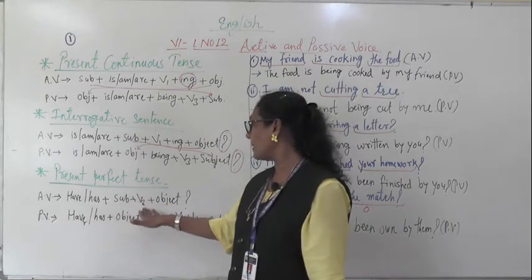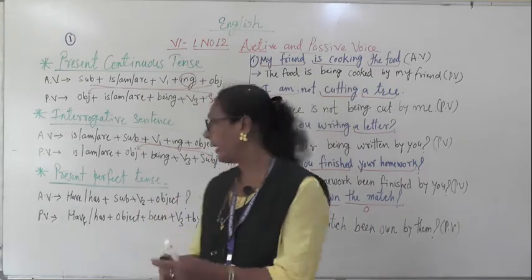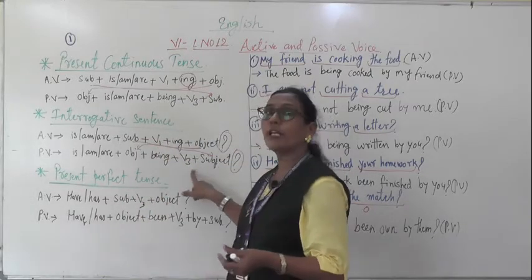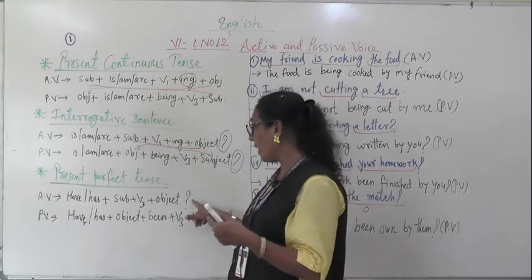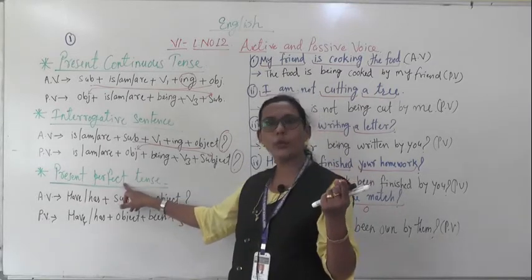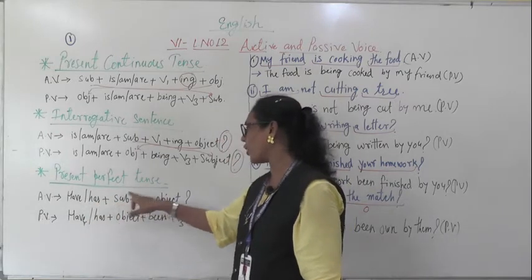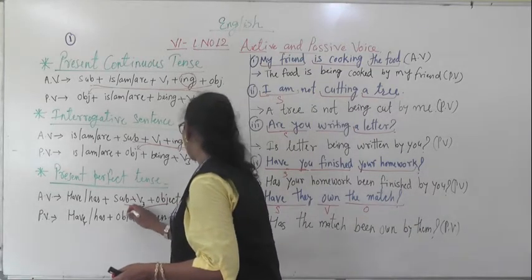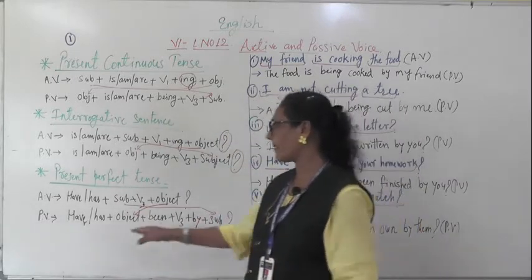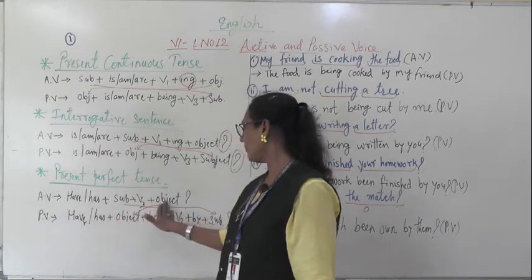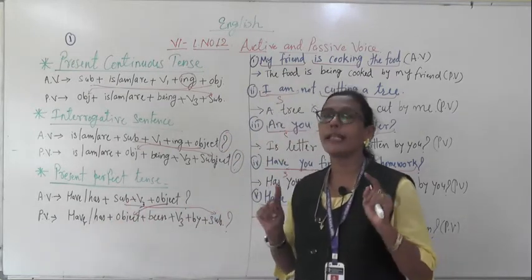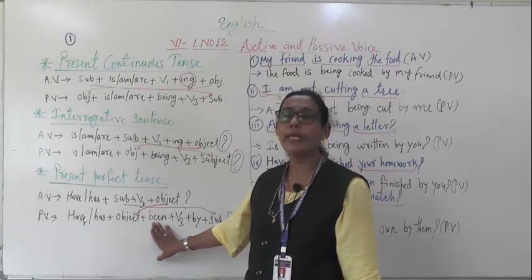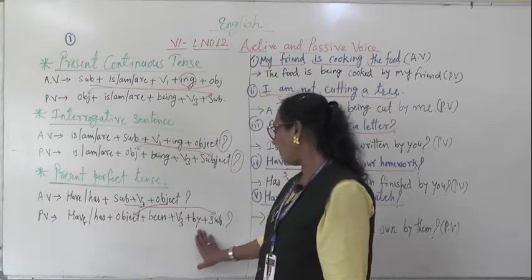In the passive voice of perfect tense, the object comes first, then has/have, then 'been' — B-double-E-N — then V3 form, then 'by' + subject. We have learned that V3 comes in passive voice, but here V3 is also in the active because it is a perfect tense. Perfect tense uses 'been,' while continuous tense uses 'being.' In the passive voice: object + has/have + been + V3 + by + subject.